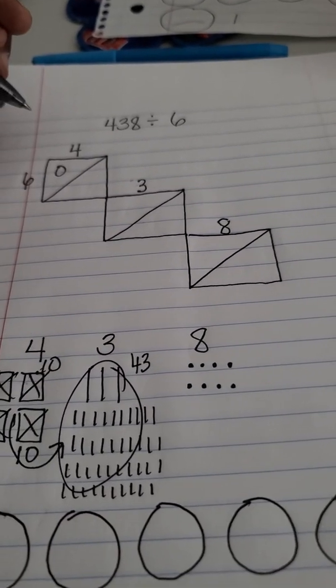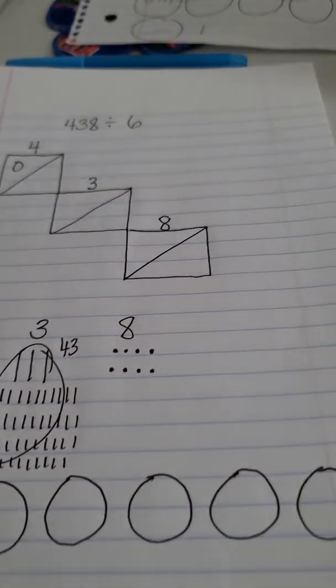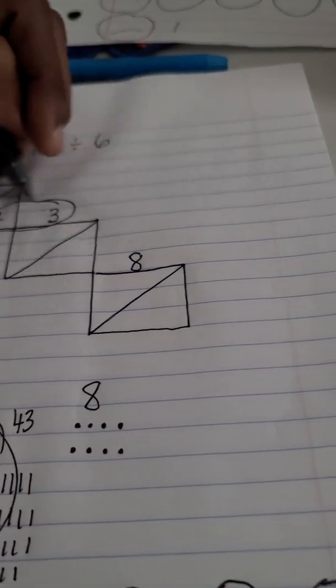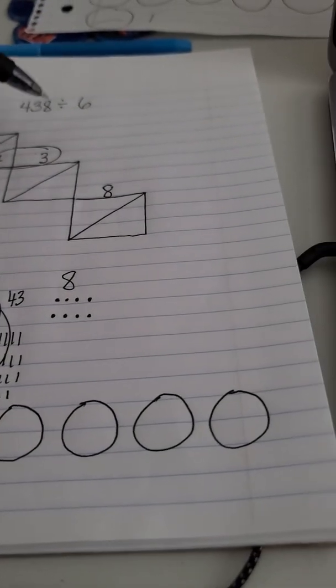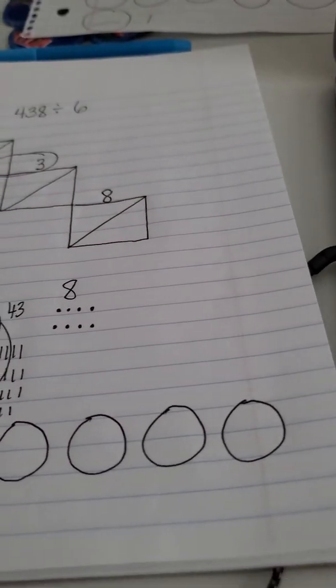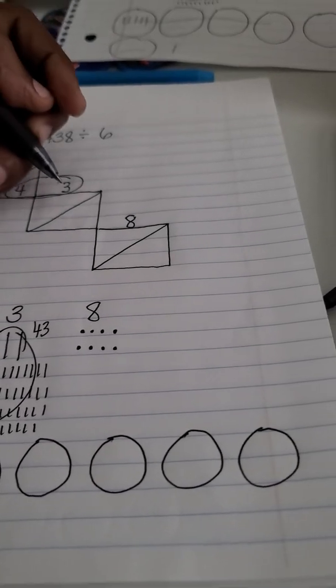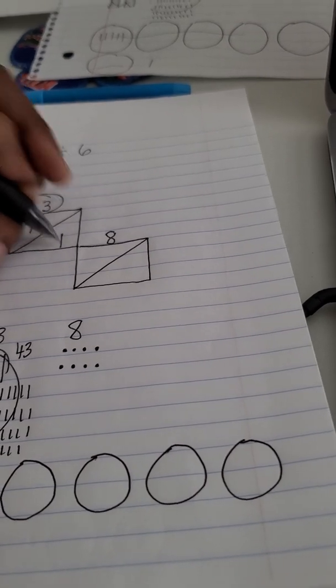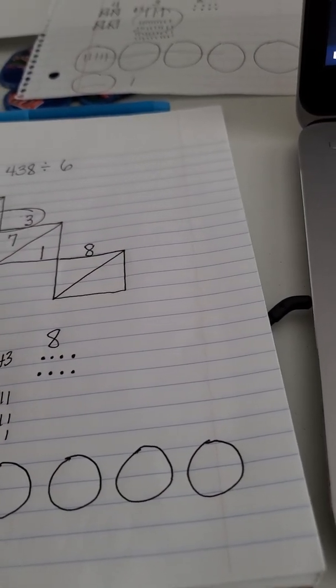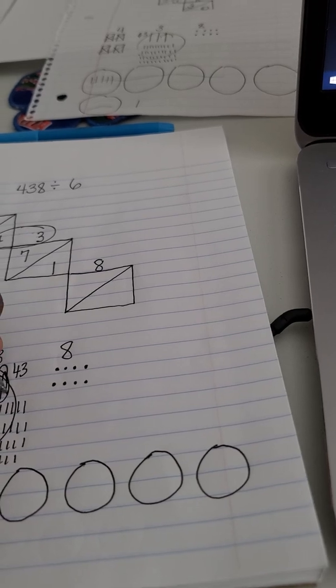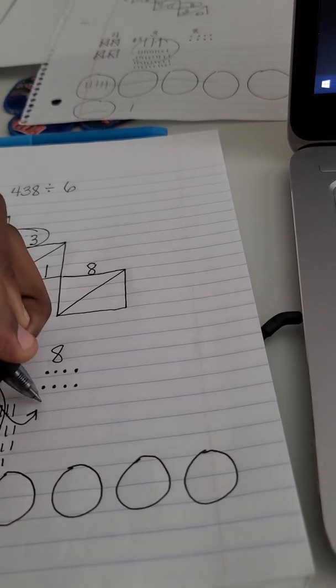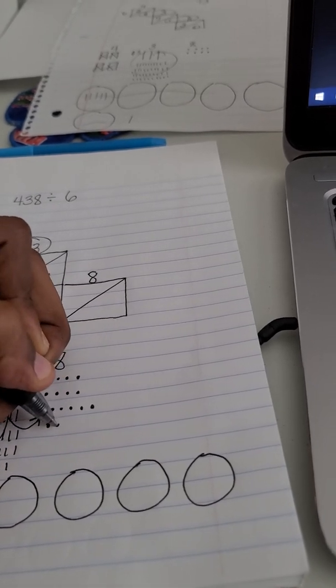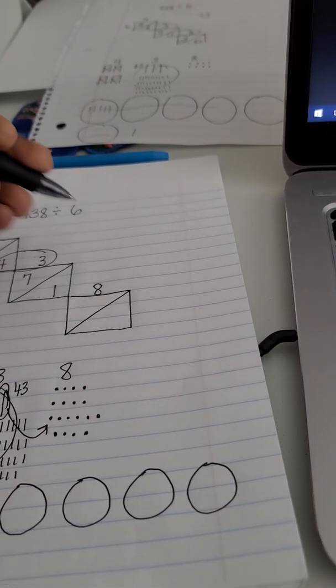Now if I take those 43 tens and put them into the six groups, that will give me seven in each group and then there will be one left over. So this one little ten I need to regroup over here into ten ones, and that leaves me with 18 ones.